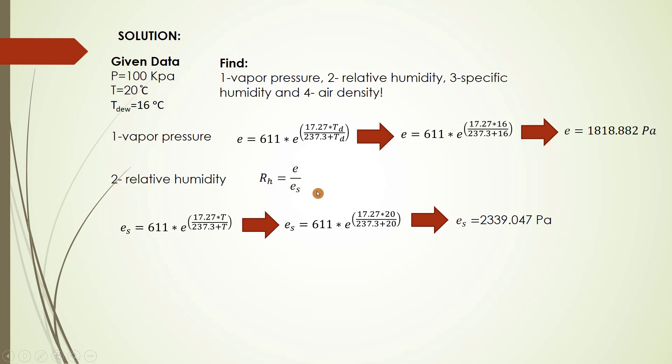Saturated vapor pressure equals 2339.047. Now we can find relative humidity. Let's put the value of vapor pressure and saturated vapor pressure in the equation. So relative humidity equals 78 percent.